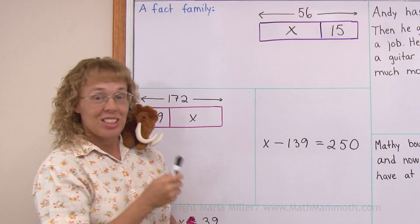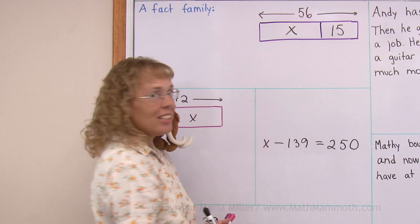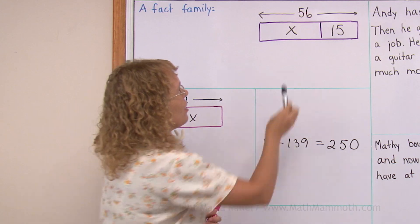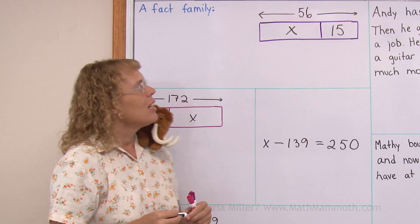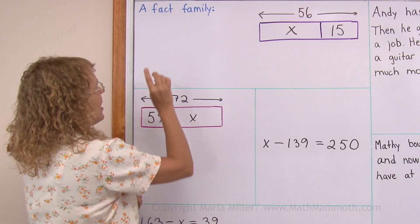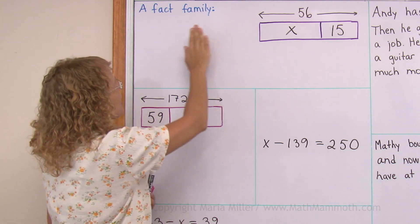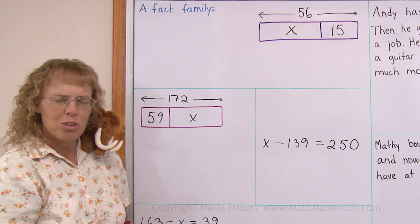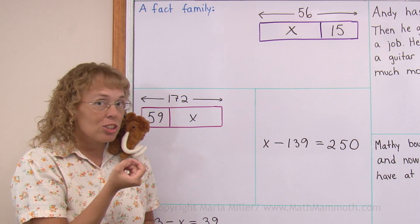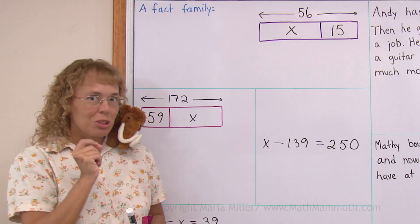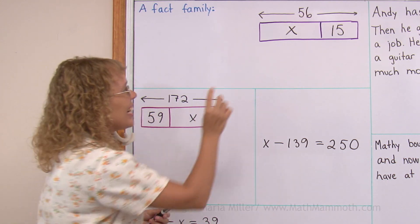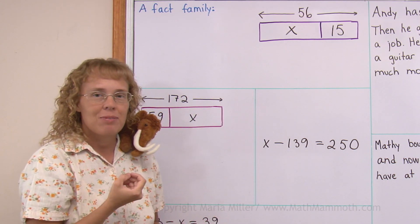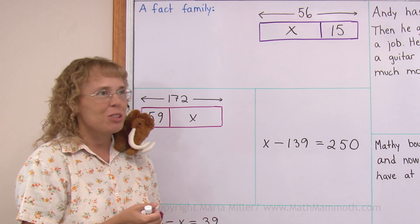You can easily solve how long x is by subtracting: 56 minus 15 would be 41 units long. But what we're going to do is not so much solve it, but write a fact family. You remember fact families — two additions and two subtractions using the same three numbers. And x is a number too; it is just unknown at first.